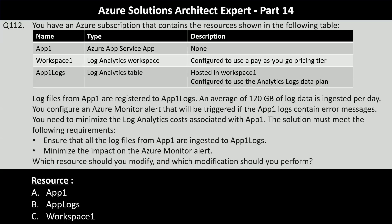Question number 112: You have an Azure subscription that contains three resources — App 1, an Azure App Service app; Workspace 1, a Log Analytics workspace configured to use a pay-as-you-go pricing tier; and App 1 Logs, a Log Analytics table hosted in Workspace 1 configured to use the analytics logs data plan. Log files from App 1 are registered to App 1 Logs, and an average of 120 GB of log data is ingested per day. An Azure Monitor alert is configured to trigger if App 1 Logs contain error messages.